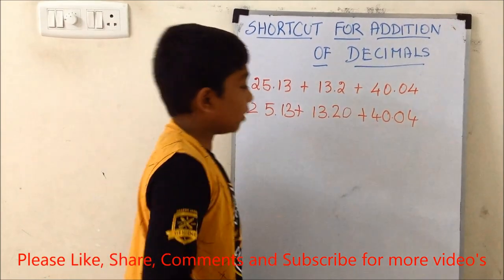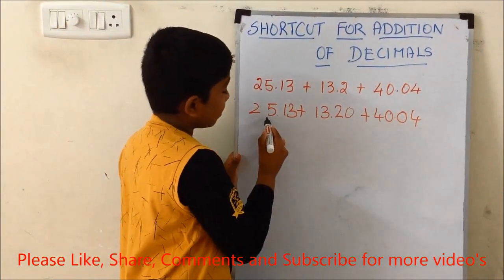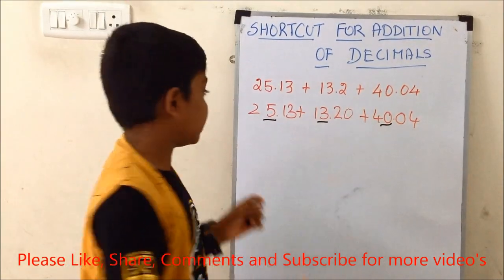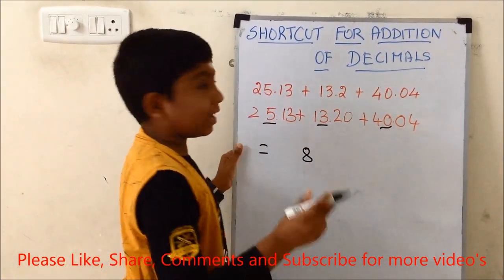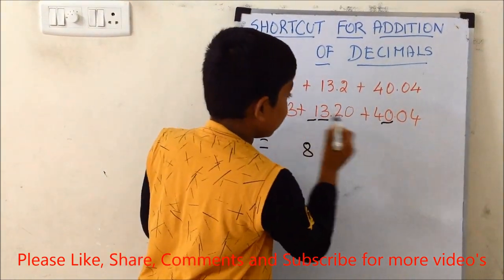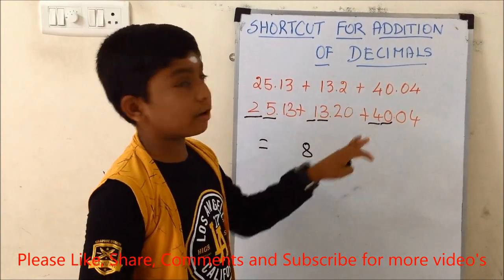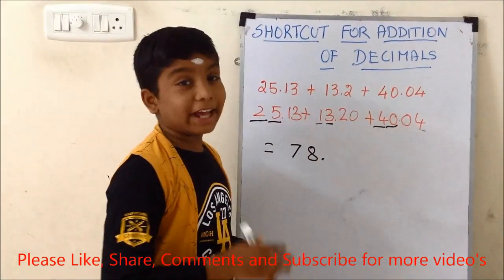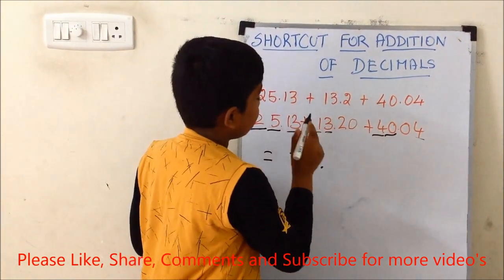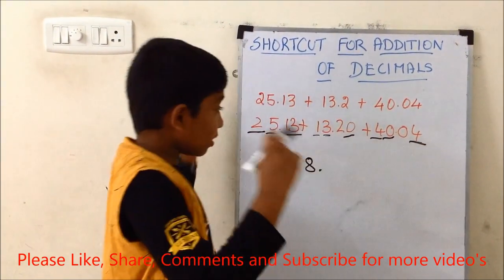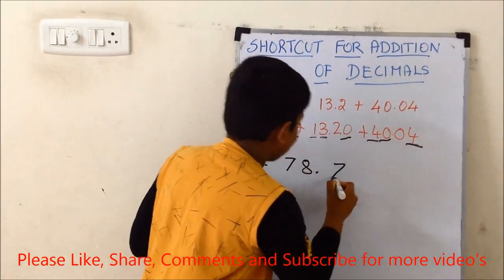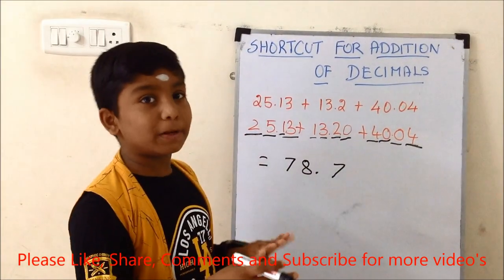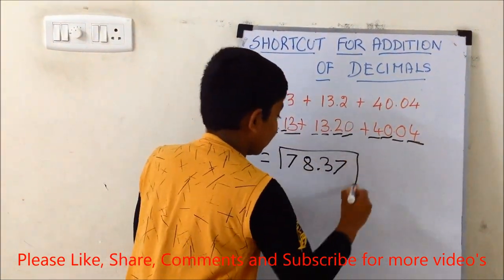Now as I said, we will do it. First add the ones digits: 5, 3, and 0 — 5 plus 3 plus 0 is 8. Write 8. Then the tens digits: 2, 1, and 4 — 2 plus 1 is 3, plus 4 is 7. Write 7 here, and put the decimal point. Next, add the first decimal digits: 3 plus 0 plus 4 is 7. Write 7. Then the second decimal digits: 1 plus 2 plus 0 is 3. So the answer is 78.37.